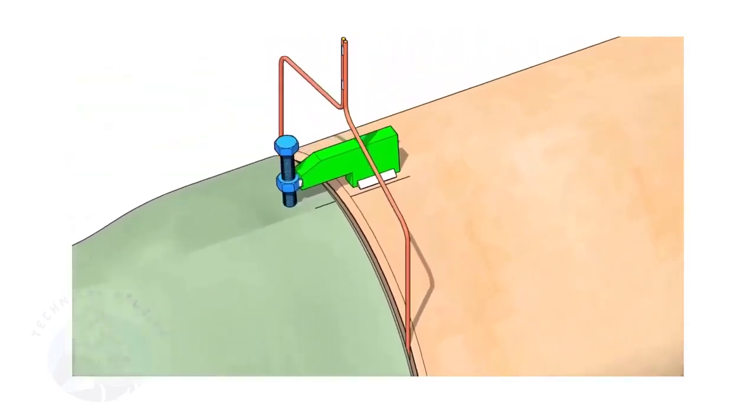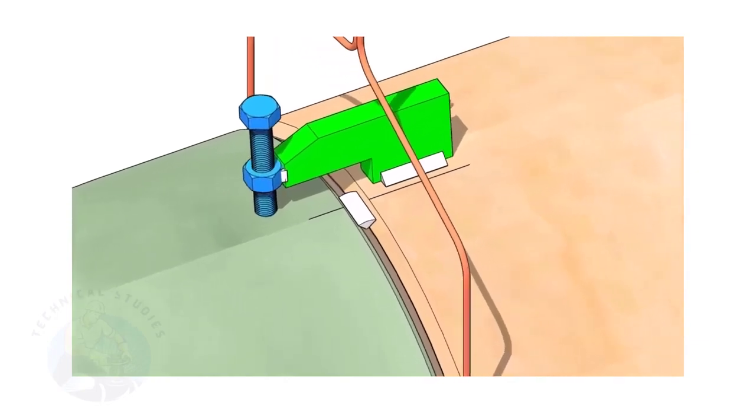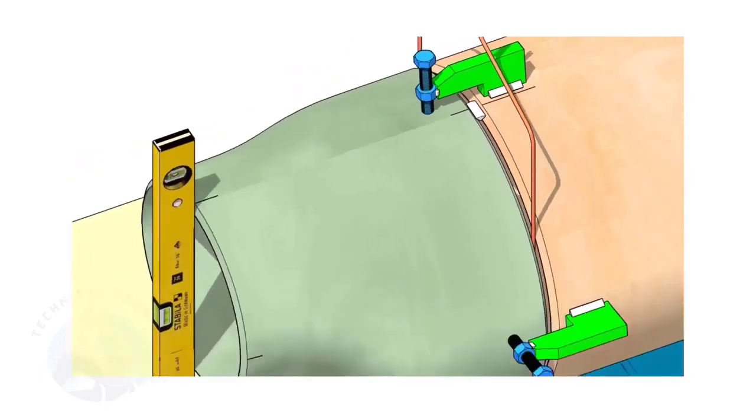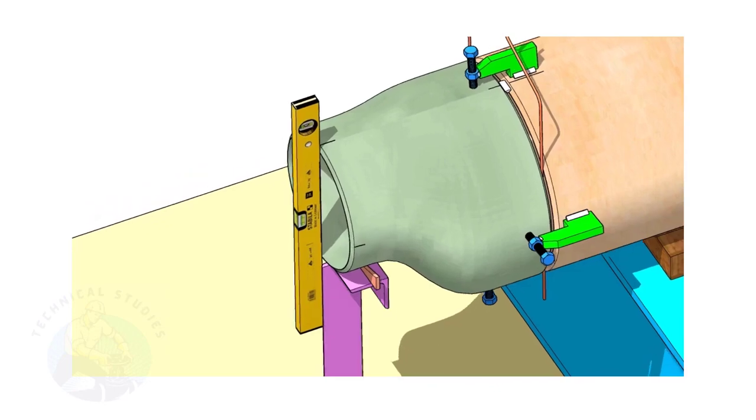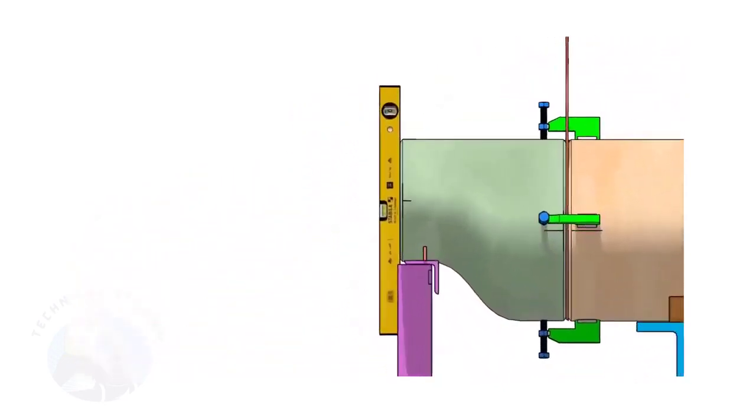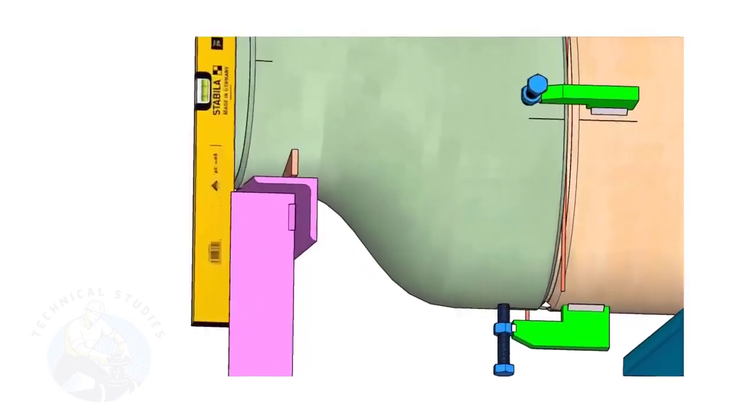Now, tack weld on the top side of the joint. Correct the levelness of the outer face of the reducer. Tack weld in the bottom side of the joint.